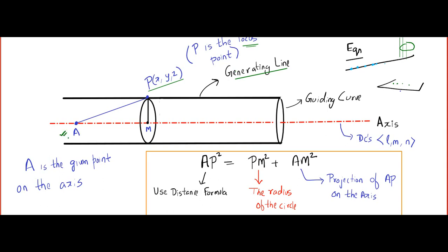M is drawn perpendicular to the axis, touching P, so that PM becomes the radius. You can see the right-angle triangle APM. Immediately, to find the equation, I use the relation AP² = PM² + AM². To find AP, use the distance formula. PM is the radius. To find AM — this is very important — AM is the shadow of AP on the axis; it is the projection of AP on the axis.